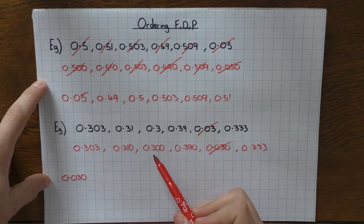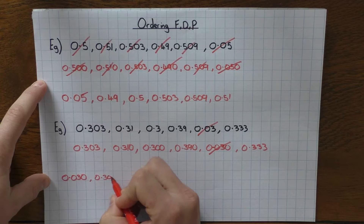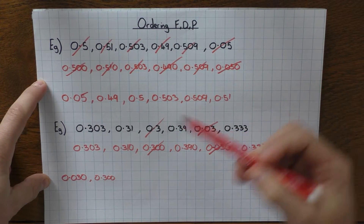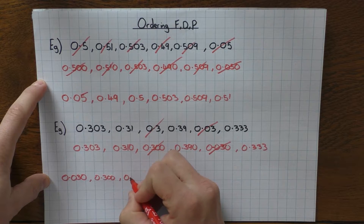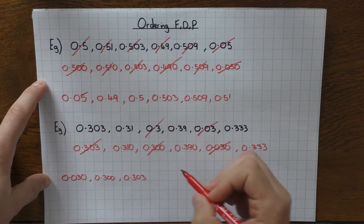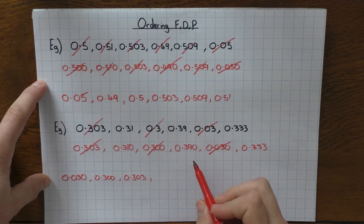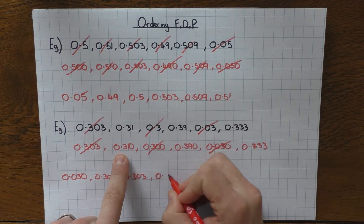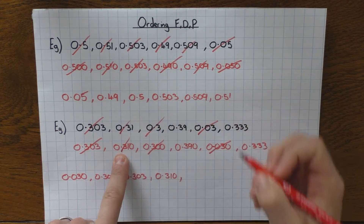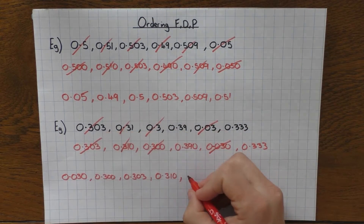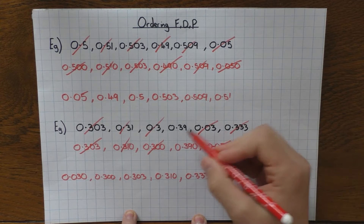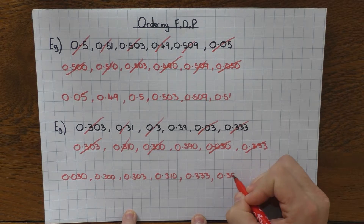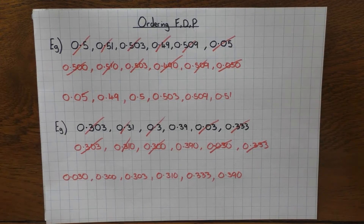Same thing - I'm going to reorder them smallest to largest, but this time using the converted ones. So: 303, 310, 300, 390, 30. So 30 is the smallest one. Next is 300. Then 303. Then 310. Then 333. And finally the 0.390. So that's the best way to avoid making any mistakes when you've just got decimals.